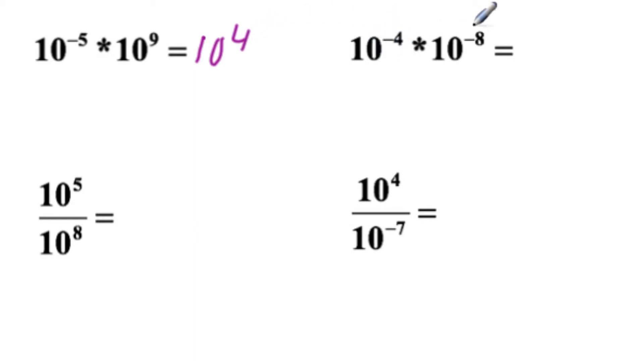When we add minus four and minus eight, adding two negative numbers gives you a negative number, so this will be 10 to the minus twelfth. Note that 10 to the minus twelfth is not a negative number, it's a positive number. It's just that the exponent is negative.